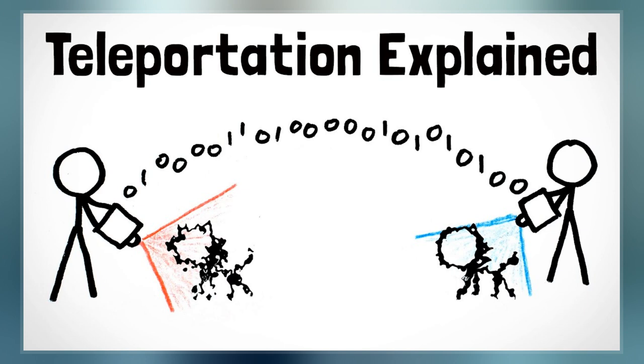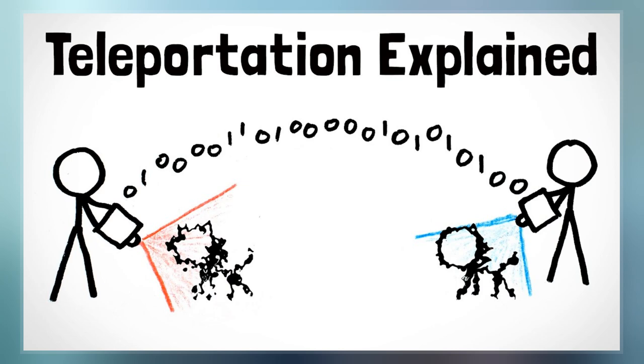In Divided Minds and the Nature of Persons, Parfit asks the reader to imagine entering a teletransporter, a machine that puts you to sleep, records your molecular composition, breaking you down into atoms and relaying it to Mars at the speed of light.